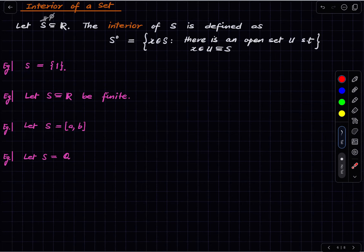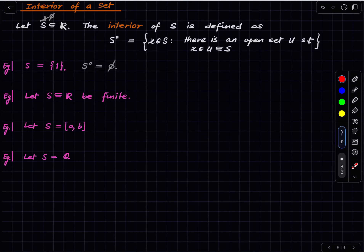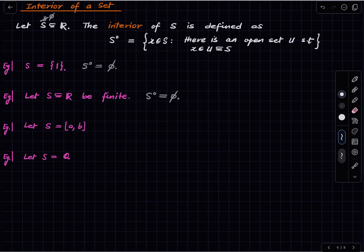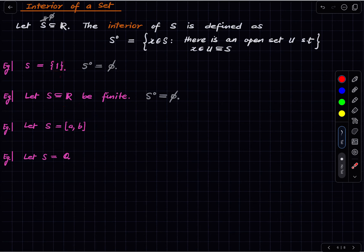The first example: the interior of the singleton {1} is empty, because the only point is 1 and any room around 1 cannot be contained in {1}. More generally, the interior of any finite subset is also empty. You should supply a proof — start with two-element sets and extend to finite sets.